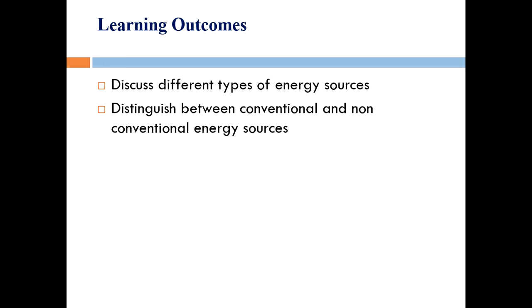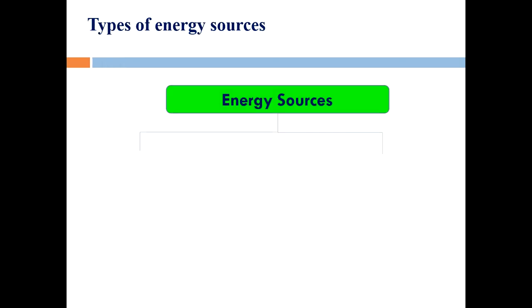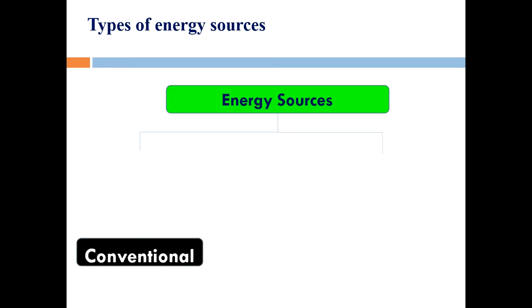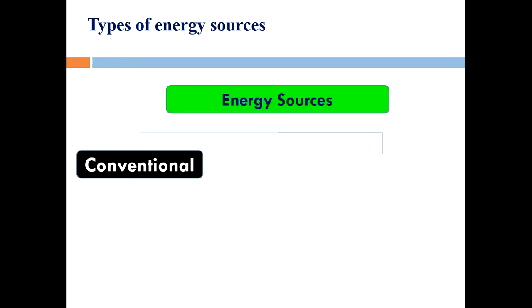The learning outcomes of this lecture are to discuss different types of energy sources and distinguish between conventional and non-conventional energy sources. The first basic type is conventional energy sources — these are formed long ago and accumulated in nature but are exhausted easily and cannot be replaced.